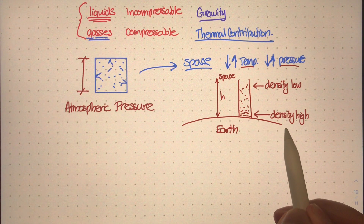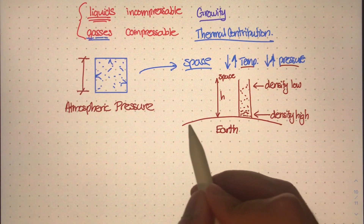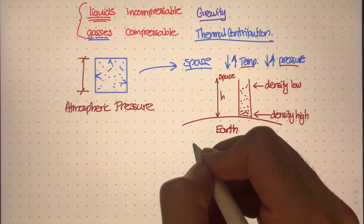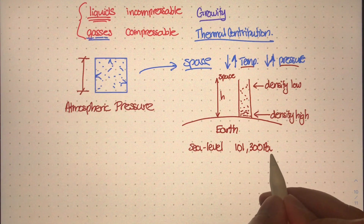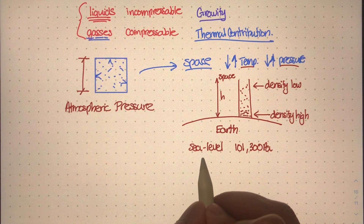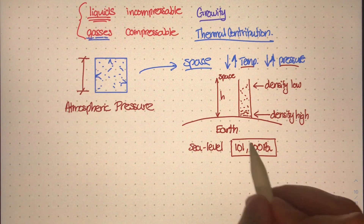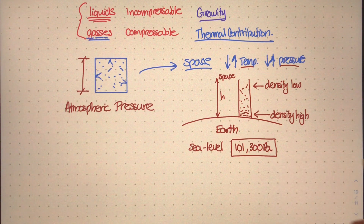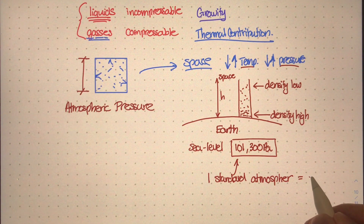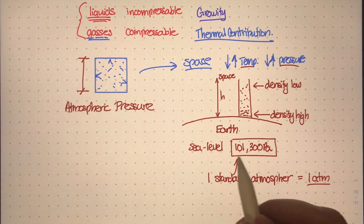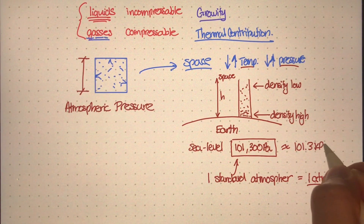Earth is not perfectly spherical — there are mountains, ridges, and valleys with different elevations. But we tend to measure the pressure at the surface of the Earth, or more specifically at sea level, to be about 101,300 Pa. That is the average sea level atmospheric pressure. We refer to this value as one standard atmosphere, or one atm. So 1 atm equals 101,300 Pa, or 101.3 kilopascals.